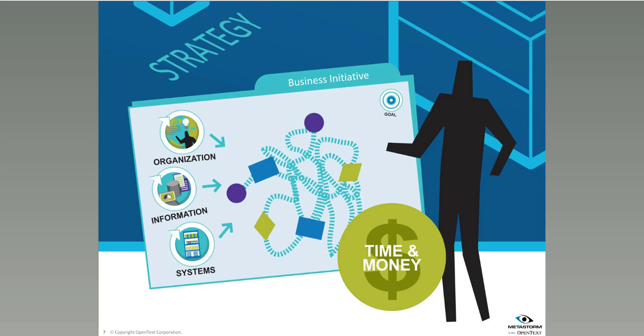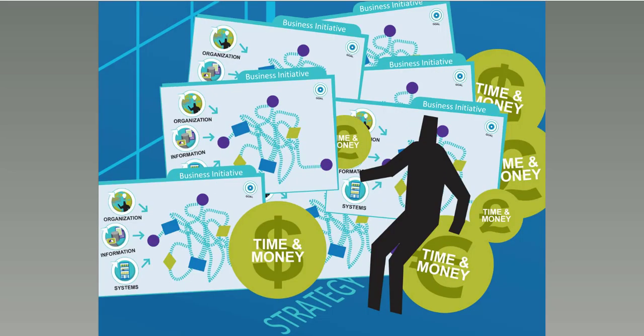When people buy a BPMS product, they look for specific business initiatives to drive process improvement. Most of the time, those business initiatives tie together organizations, information, and systems. The challenge is that companies have a whole bunch of these business initiatives and they're not aligned — they're looking at different systems, different resources, different information, and it's not being shared. They're running almost like individual silos, and companies end up spending huge amounts of time and money just to do process improvement initiatives.